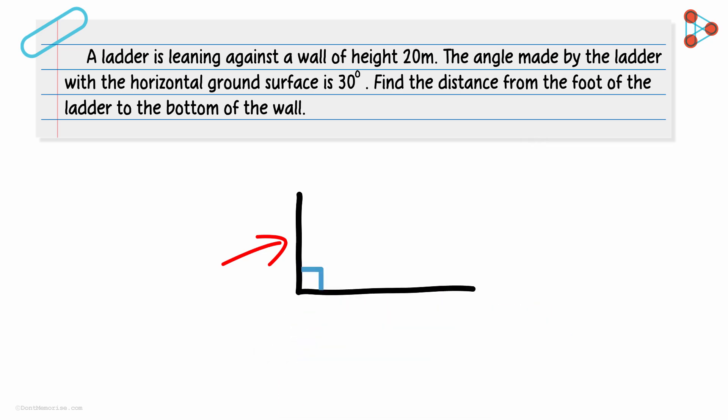That's something we can definitely assume. We are also given the height of the wall as 20 meters. A ladder is inclined against the wall like this. Again, you can represent the ladder with an inclined line just like we have done here.